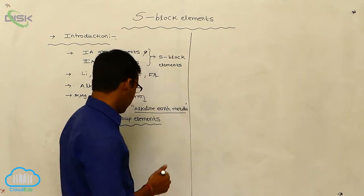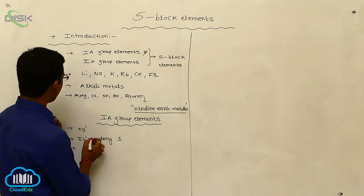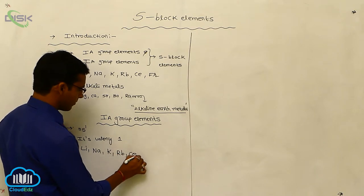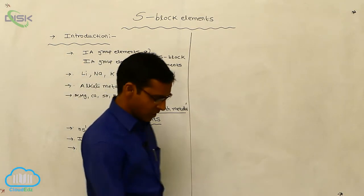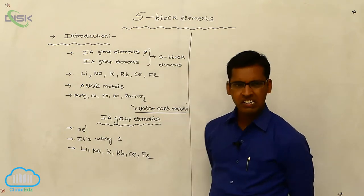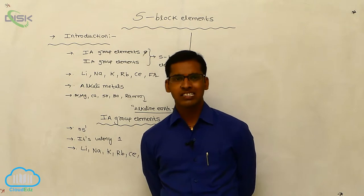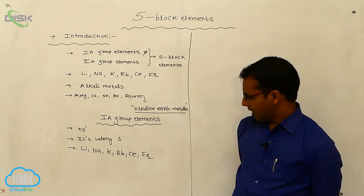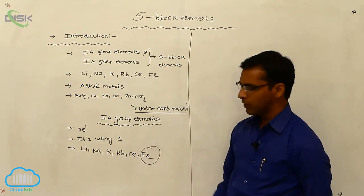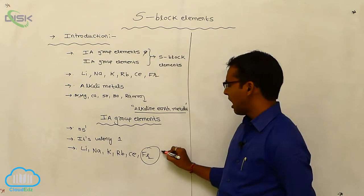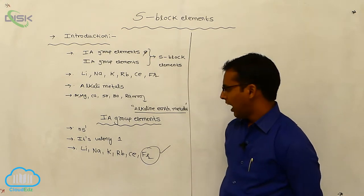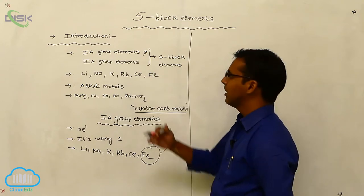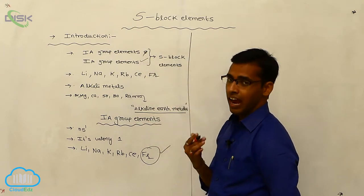The first A-group elements are lithium, sodium, potassium, rubidium, cesium, and francium. All are metals and all are electropositive metals. Their valence is one — the outermost shell contains only one electron. Among them, francium is a radioactive element, which is highly unstable in nature. We will discuss all the properties of first A-group elements, then the second A-group elements and their behavior.